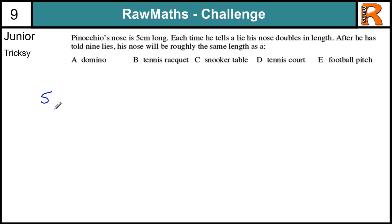So we start with five centimetres. And after the first lie, he's going to double five, which is going to be ten centimetres. Then double it again. Twenty. Then forty. Then eighty. Then one hundred and sixty. Then three hundred and twenty. So that's the first, second, third, fourth, fifth, sixth. The seventh one is going to be six hundred and forty. The eighth one is going to be one thousand two hundred and eighty. And the ninth one is going to be double that, which is going to be two thousand five hundred and sixty centimetres.